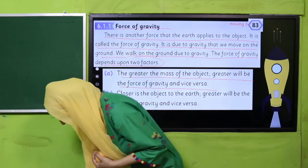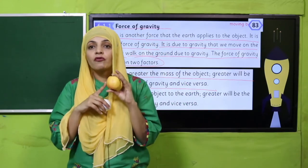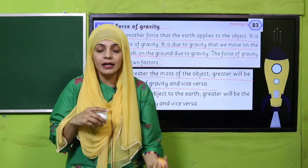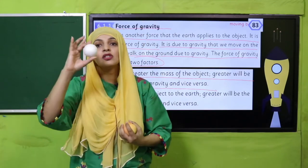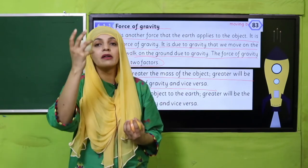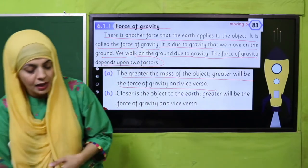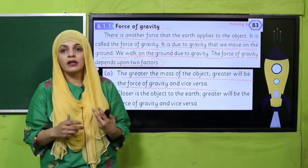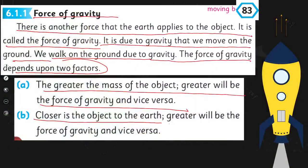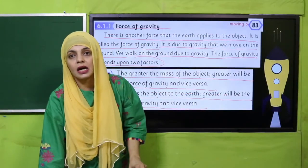Agar kisi cheez ka mass zyada hai to gravity uske par zyada act karegi, usko zyada pull karegi. Similarly, agar kisi cheez ka mass kam hai — it is lighter — to gravity uske upar kam act karegi. So more the mass, the more gravity will be; lesser the mass, lesser will gravity act on it. Closer it is to the ground, greater will be the force of gravity, and vice versa.